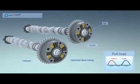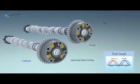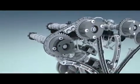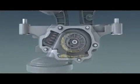CVVT operates with hydraulic pressure and optimizes the opening and closing timing of the valves. The exhaust valves are retarded to increase internal exhaust gas recirculation, improving fuel economy and exhaust gas emission.